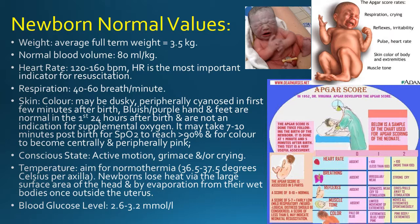Newborn normal values: weight — average full term weight is 3.5 kilos. Normal blood volume is 80 mils per kilo. Heart rate 120 to 160 beats per minute; heart rate is the most important indicator for resuscitation. Respiration 40 to 60 breaths per minute. Skin colour may be dusky, peripherally cyanosed in the first few minutes after birth. Bluish-purple hands and feet are normal in the first 24 hours after birth and are not an indication for supplemental oxygen.